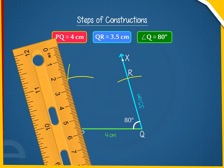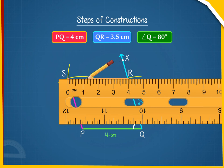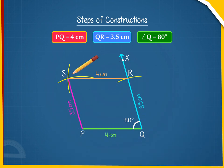F. Join P to S and R to S to get the parallelogram PQRS. PQRS obtained is the required parallelogram.